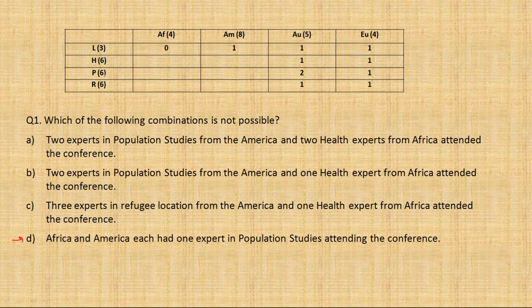The fourth option says Africa and America each had one expert in population studies. Filling this in, the population row would sum to only 5 - but we know it should be 6. This is an impossible condition, and that is our answer. Starting from the last option paid off immediately.